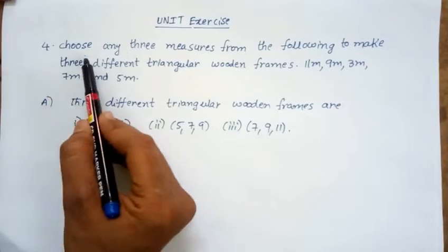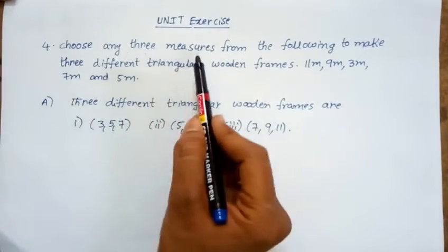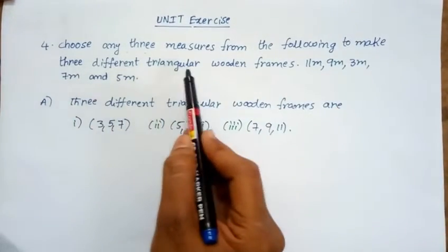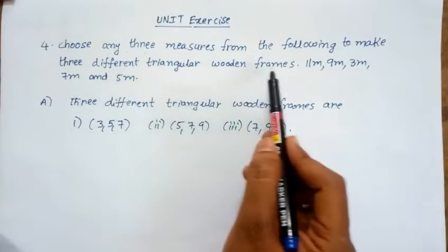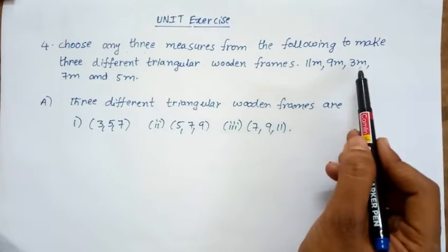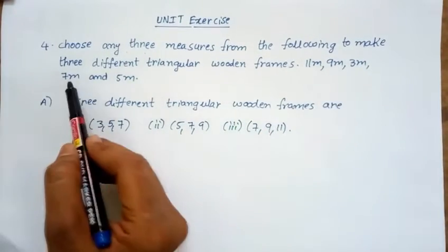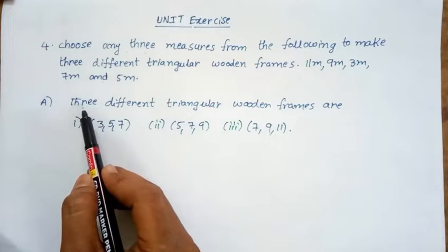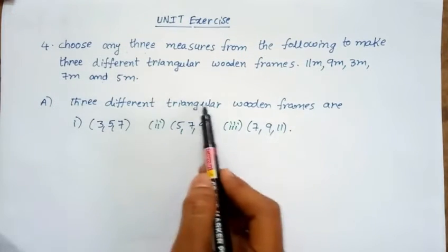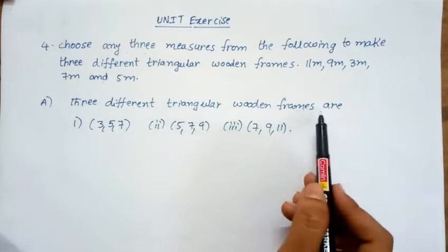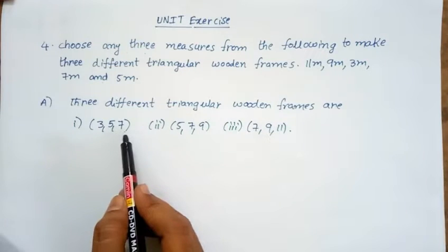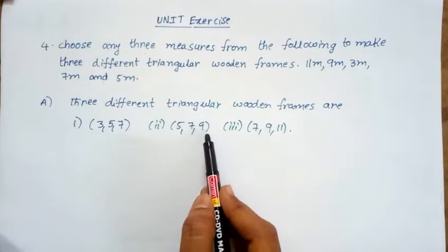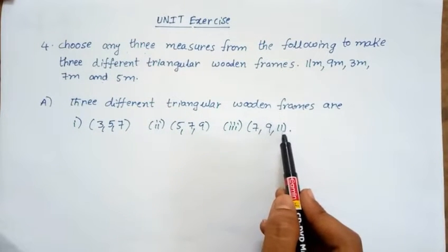Next problem, fourth: choose any three measures from the following to make three different triangular wooden frames — 11 meters, 9 meters, 3 meters, 7 meters, and 5 meters. Solution: three different triangular wooden frames are (3, 5, 7), (5, 7, 9), and (7, 9, 11).